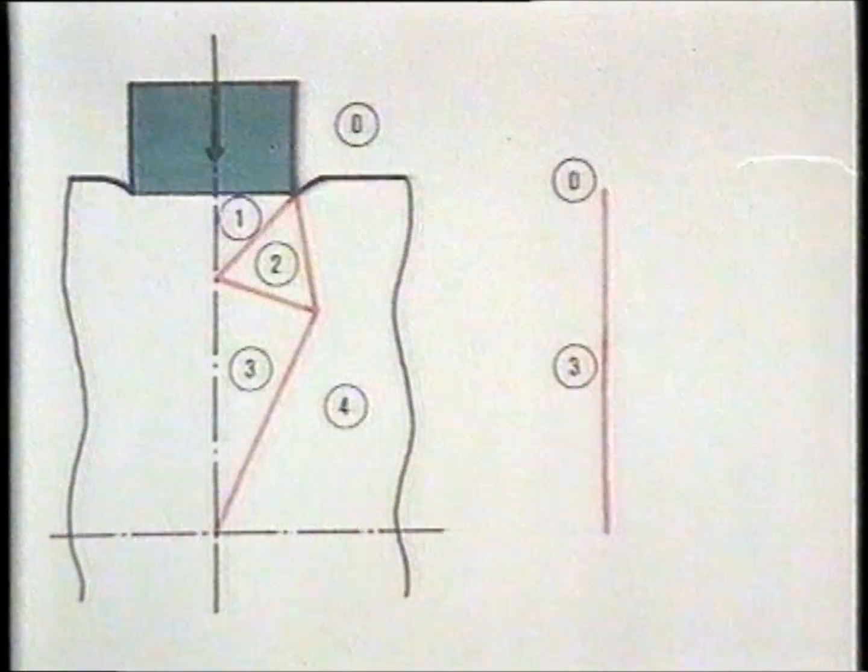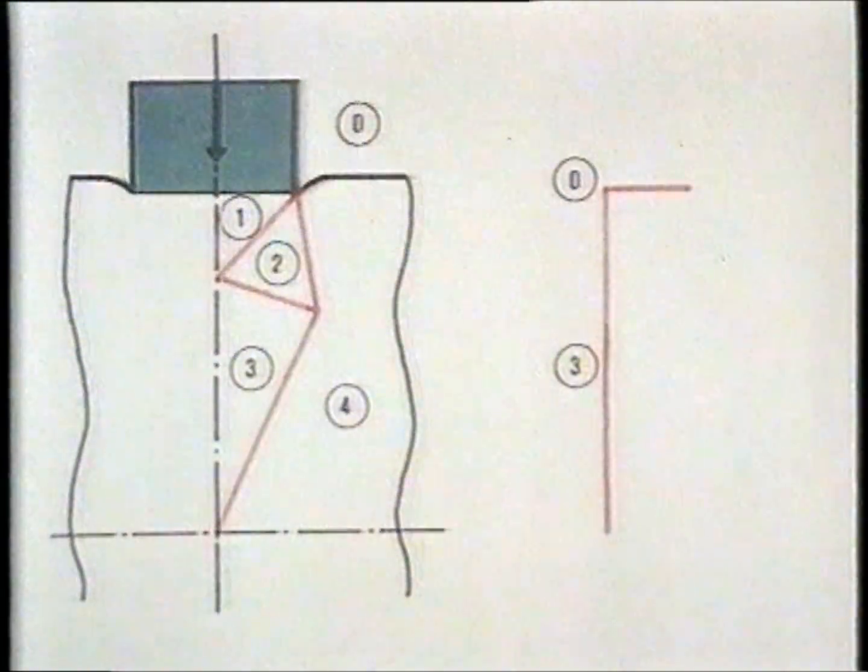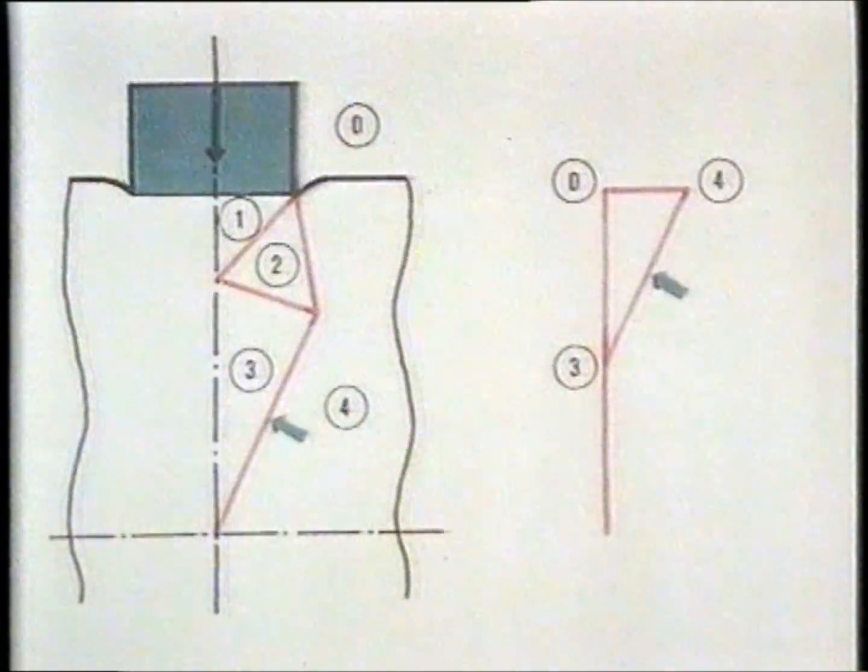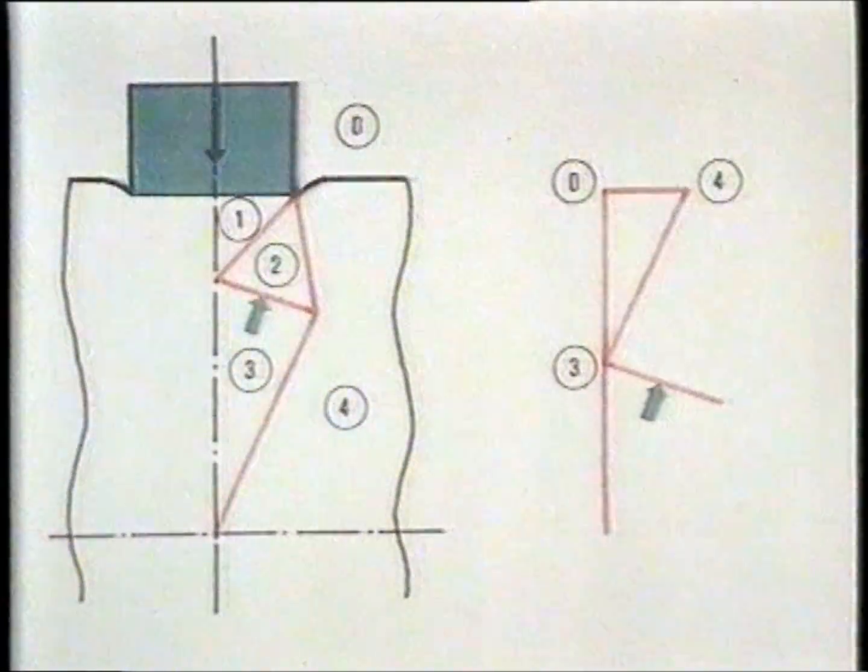In region four, the material moves horizontally. Finally, points two and one are found on the hodograph by drawing lines parallel to the remaining lines of discontinuity in the field.